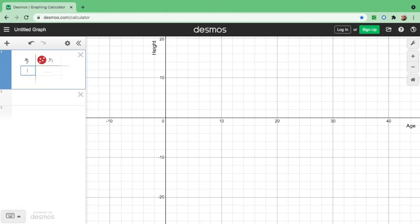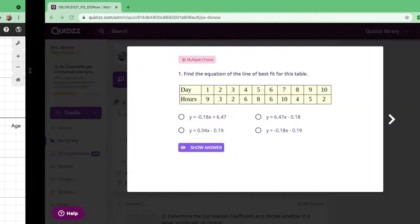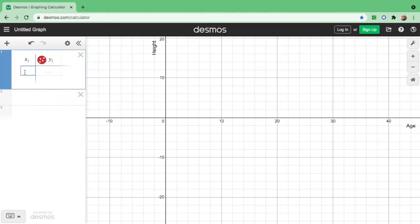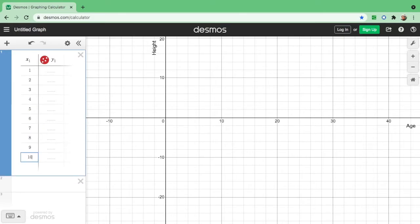As you can see, we have x1 and y1. So first thing to do is to put all the values of x's, which is day, from 1 to 10. We have 1, 2, 3, 4, 5, 6, 7, 8, 9, and 10.